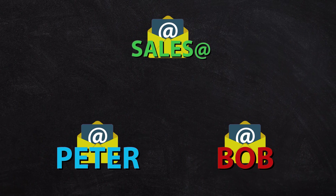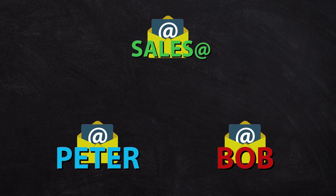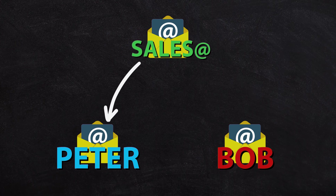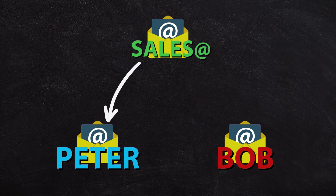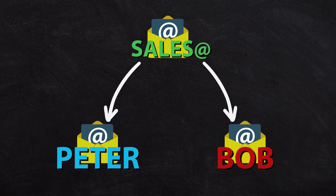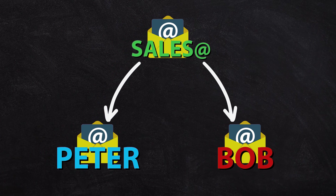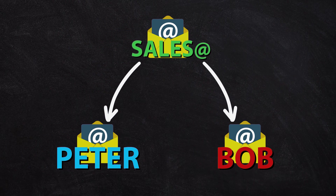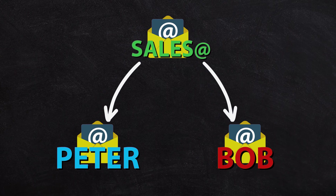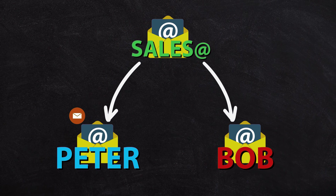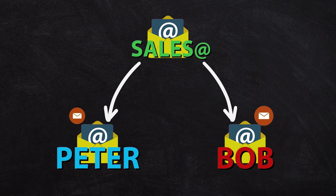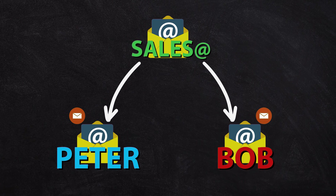Our distribution group — let's say for example I want sales@ to automatically go to Peter and go to Bob as well. If we use the distribution group method, it's automatically going to place a copy of that email in Peter's mailbox and a copy of that email in Bob's mailbox.